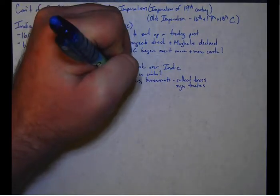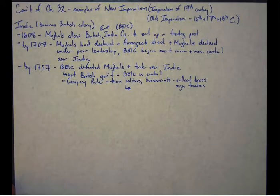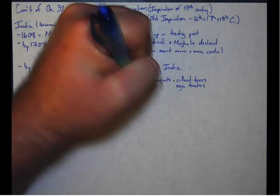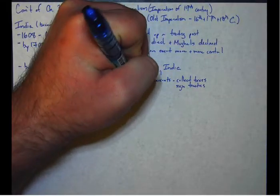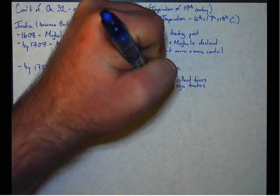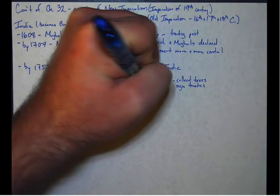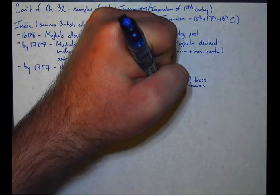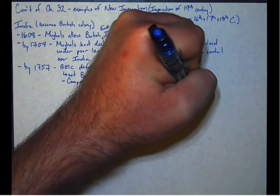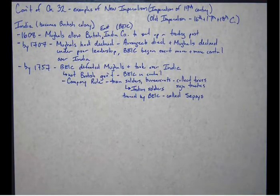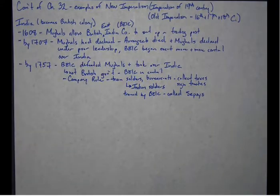Now, the last thing we need to know about this, at least for the time being, is that these Indian soldiers trained by the British East India Company were called sepoys. These are Indians, but they're trained by the British, and they are called sepoys.